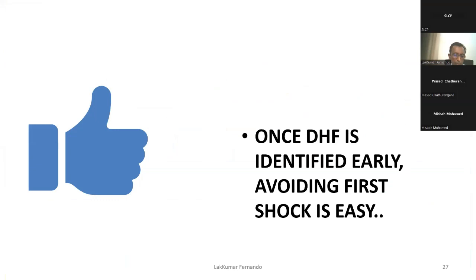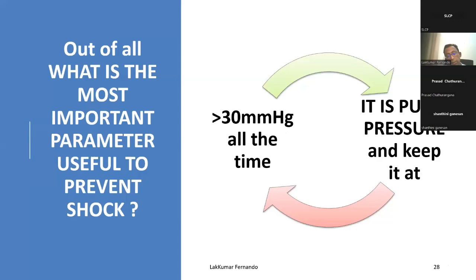Once DHF is identified, the key is avoiding shock. Our guideline introduces the 30 mmHg pulse pressure concept. If you can maintain the pulse pressure above 30 mmHg at all times, you can prevent shock. This applies equally to patients from infants to adults.